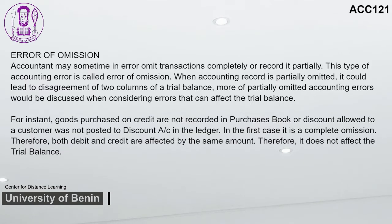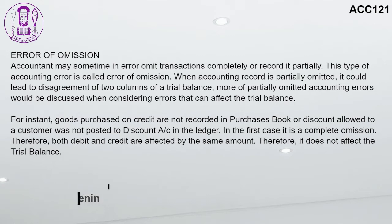Error of omission: Accountants may sometimes in error omit transactions completely or record them partially. When an accounting record is partially omitted, it could lead to disagreement of the two columns of a trial balance. For instance, goods purchased on credit are not recorded in the purchases book, or a discount allowed to a customer was not posted to the discount account in the ledger. In the first case, it is a complete omission — both debit and credit are affected by the same amount, so it does not affect the trial balance.